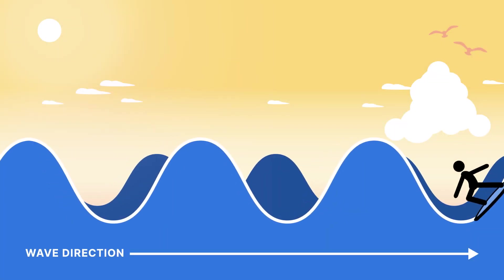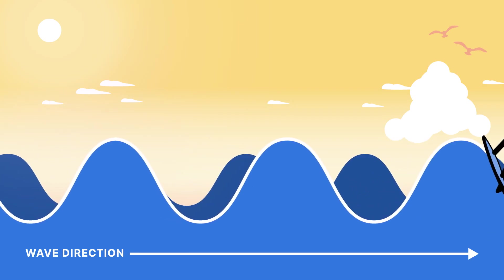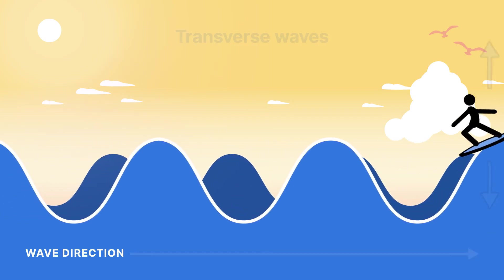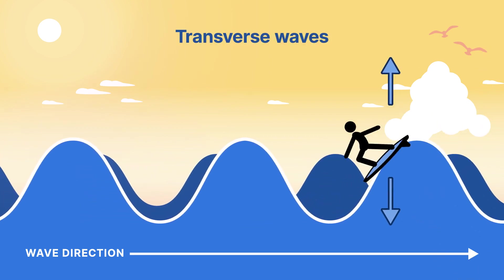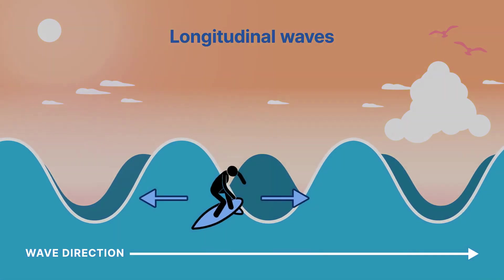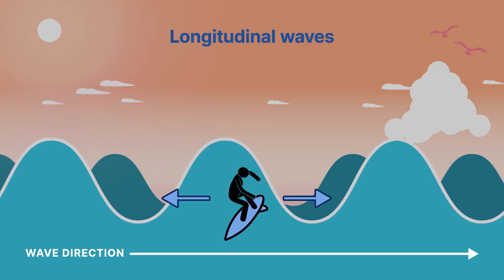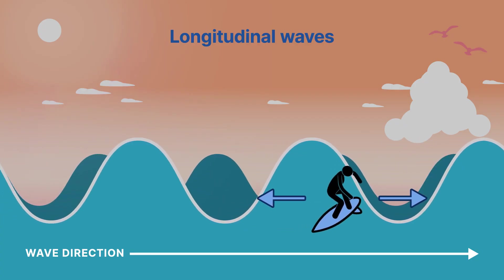Think about a surfer getting ready to ride the waves. The surfer represents particles and the waves indicate the wave's direction. In transverse waves, the surfer is transitioning out to sea and moving up and down against the waves coming into shore. In longitudinal waves, the surfer hopes to ride the wave for a long time, so they surf parallel to the wave.